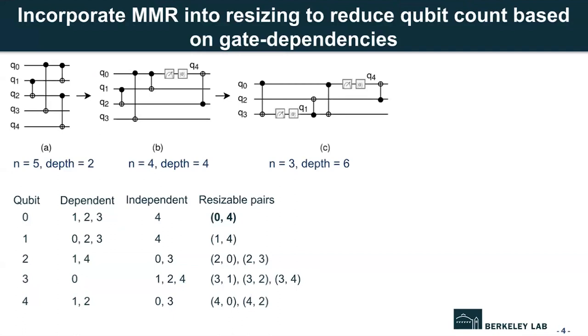So here I show a more complicated circuit. In Figure A, we can see the input circuit has five qubits. And then for this circuit, we find a bunch of resizable pairs. And according to some cost function, we can pick the best one to insert. We insert MMR, and the circuit is resized to only three qubits in the end, as shown in Figure C.